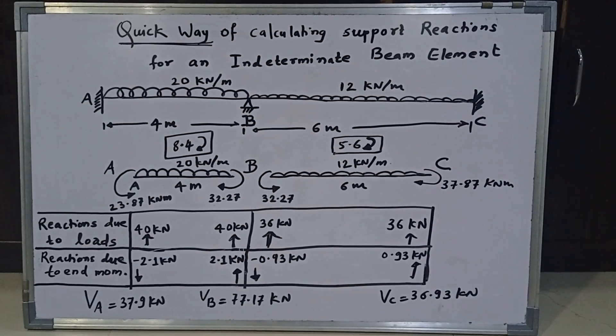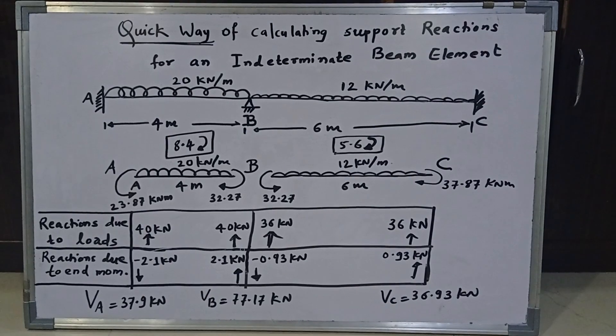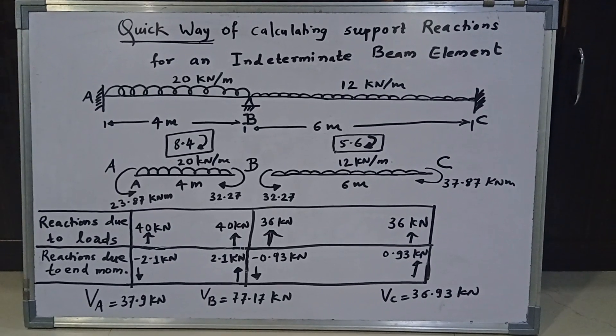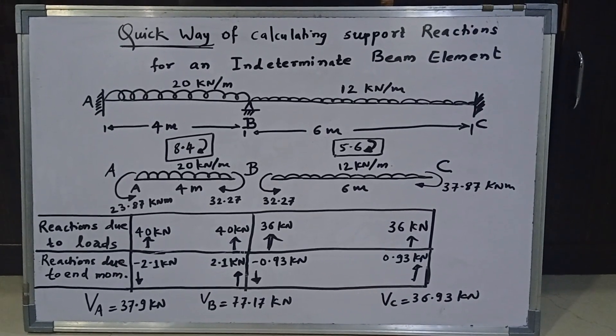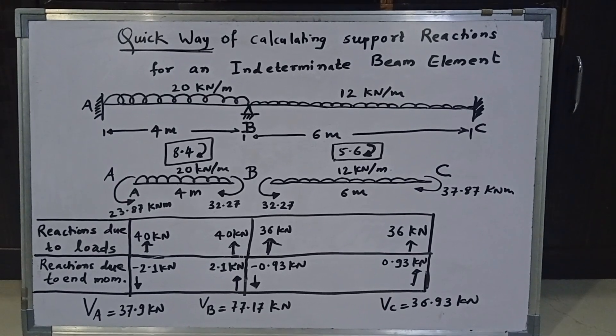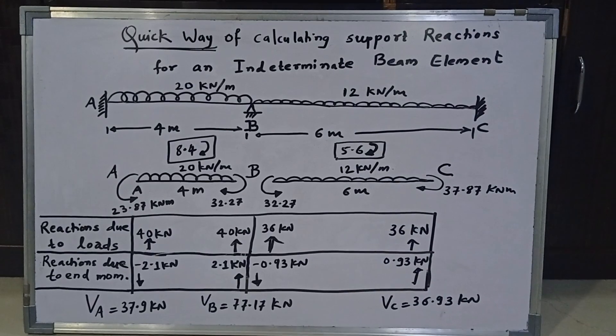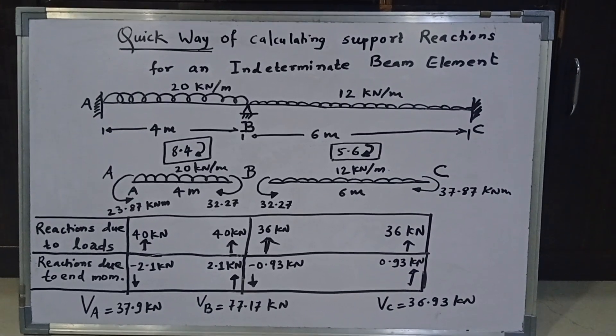Now for this I have considered a simple two span continuous beam which is obviously indeterminate in nature. It is fixed at A and fixed at C as shown in figure 1. It is simply supported at B. Span AB is 4 meter and it carries a UDL of 20 kN per meter. Span BC is 6 meter and it also is carrying a UDL of 12 kN per meter.